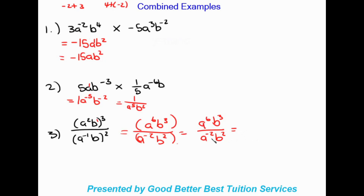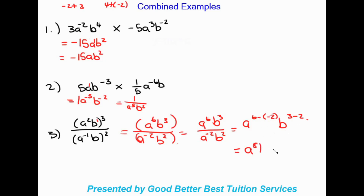Now we divide — same base, subtract exponents. For a: six minus negative two becomes six plus two, giving a to the eight. For b: three minus two gives b to the one. So the final answer is a to the power of eight b.